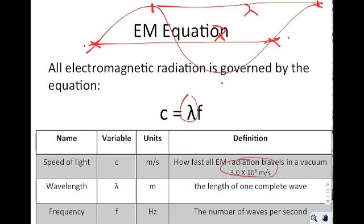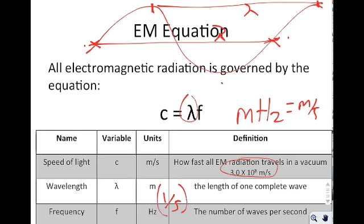Frequency is measured in hertz. People often wonder how the units match up: hertz is really one over second — the number of waves per second — so meters × (1/second) = meters per second, matching the units of C.